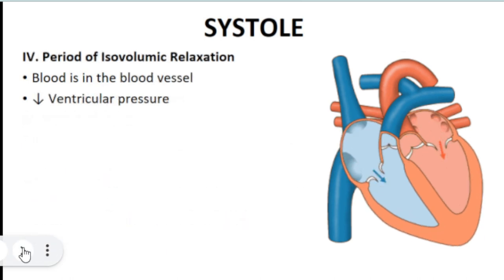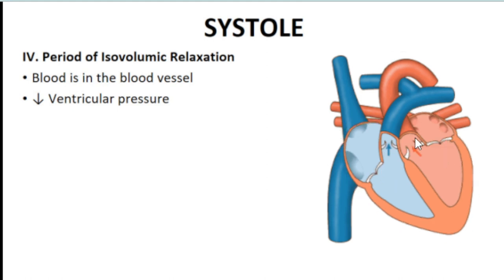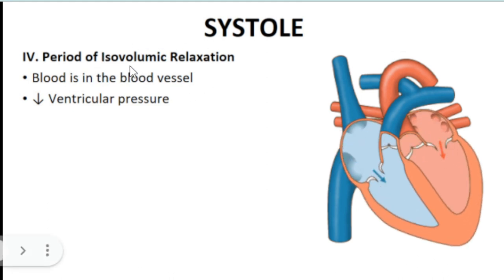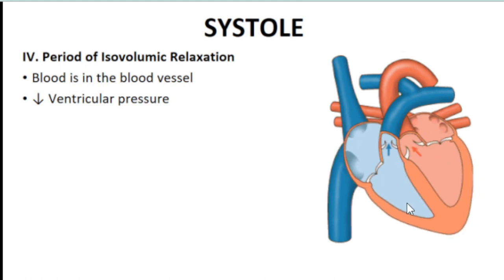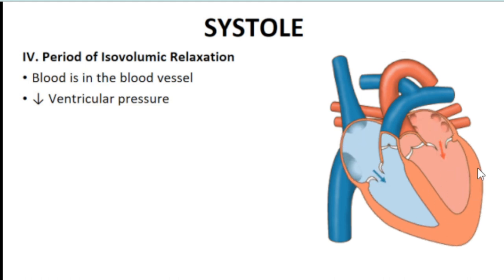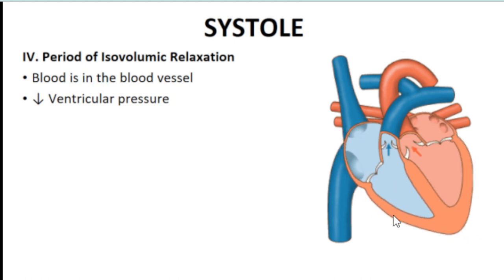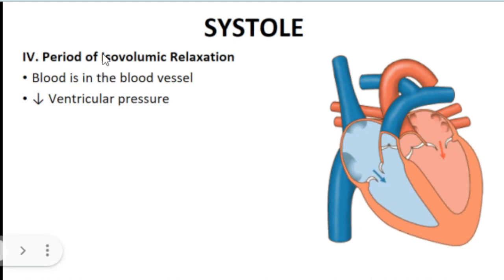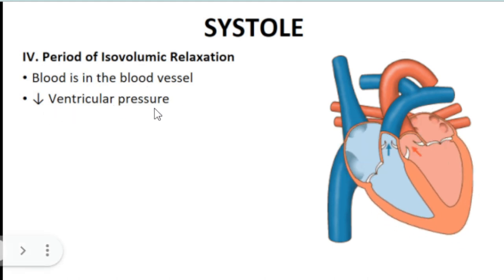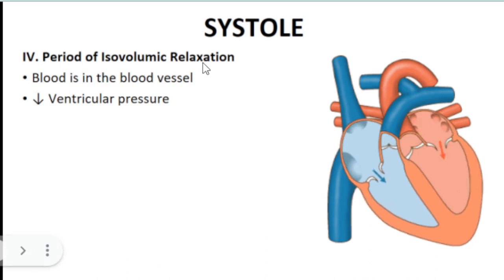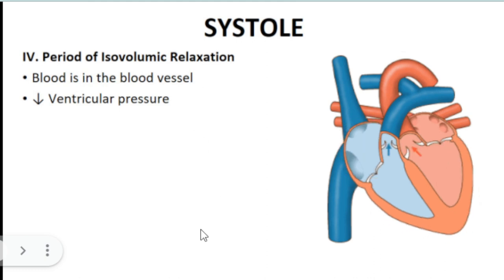The last phase of systole is isovolumic relaxation. The semilunar valves close, and both the AV valves and semilunar valves are closed. Since the ventricles are now nearly empty, they begin to relax — there is movement but no change in volume, and ventricular pressure drops. This marks the end of systole.